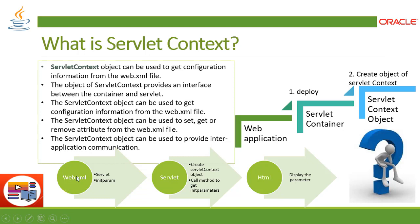To understand it better, consider this process. It starts from the web.xml deployment descriptor, where we have the servlet tag. Within the servlet tag, we define init-param — this is the tag where we define parameters. These parameters are defined in the deployment descriptor, deployed on a server, and with the help of the servlet we create an object and call the method to get the init parameters.